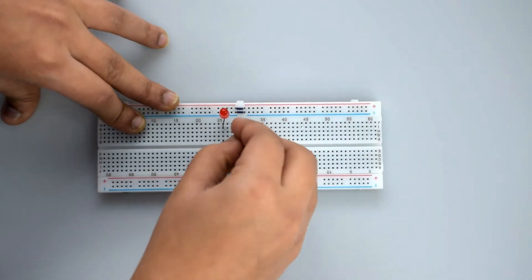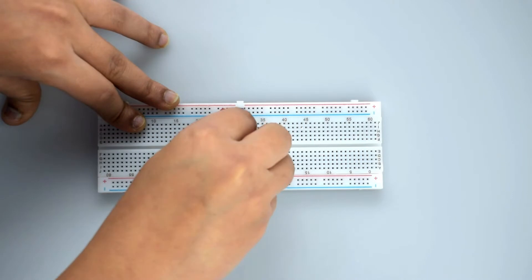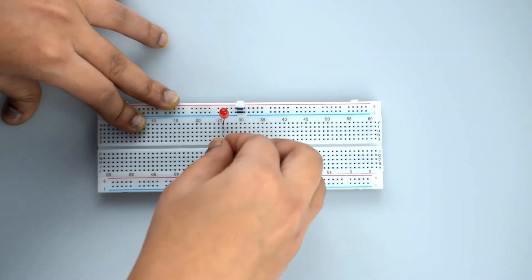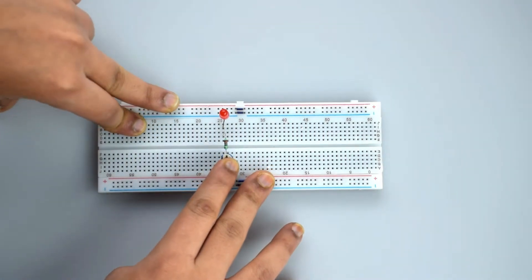The other terminal of the 470 ohm resistor must be connected to the data pin of the potentiometer.